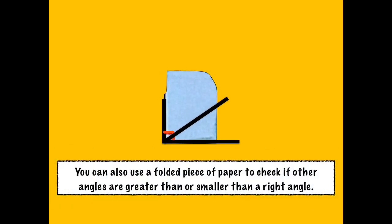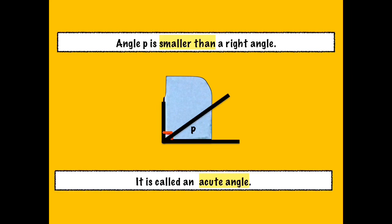Let's see how that is possible. You can also use a folded piece of paper to check if other angles are greater than or smaller than a right angle. Look at the given angle. Angle T is smaller than a right angle. It is called an acute angle. An acute angle is an angle that is smaller than a right angle.